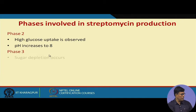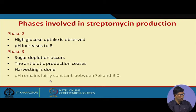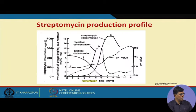In Phase 3, sugar depletion occurs and antibiotic production ceases. Harvesting is done at this stage, and pH remains fairly constant between 7.6 and 9.